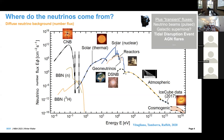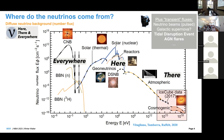The most abundant neutrinos are the cosmic neutrino background and solar neutrinos. I will mostly talk about the very highest energetic neutrinos — this part of the spectrum. I will talk about the 'there and everywhere' part, meaning the highest energetic part and a little bit about atmospheric neutrinos. I won't talk about solar neutrinos even though those are also astrophysical neutrinos.